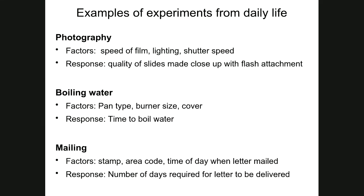We do experimentation in our daily lives all the time. For photography enthusiasts trying to get the right quality of slides with a flash attachment, the factors include film speed, shutter speed, and lighting — a lot of different things to consider with an SLR camera. Even boiling water involves factors like whether you use a kettle or a pan, the level of heat, and whether it's covered. Similarly, how long it takes a letter to be delivered depends on the area code, whether it's posted before or after collection time, and whether the right stamp is applied. We're constantly thinking about options and alternatives.